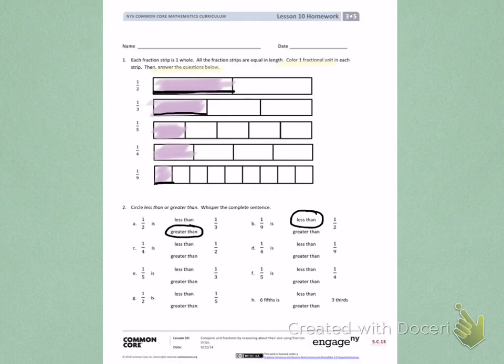Letter C. 1 fourth is less than or greater than 1 half. We are still using 1 half. And this time we are looking at 1 fourth. So you have to look at the top and almost to the bottom.